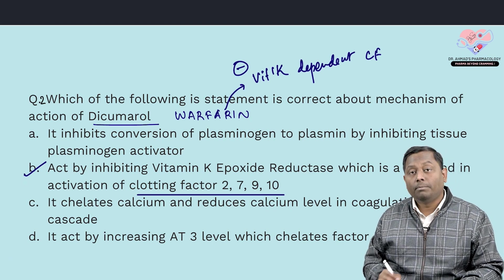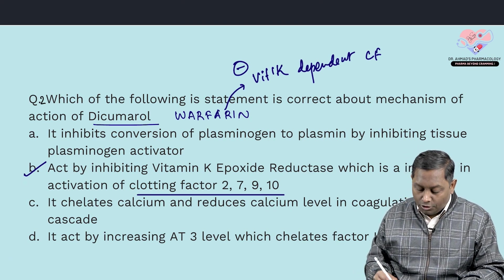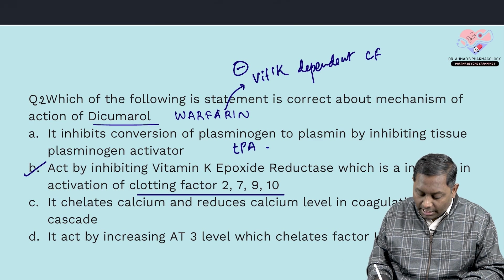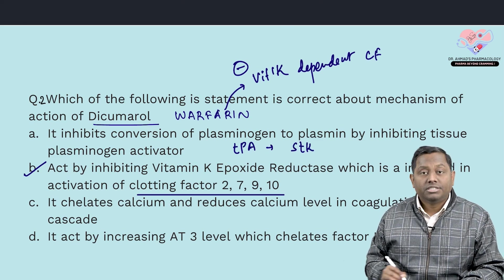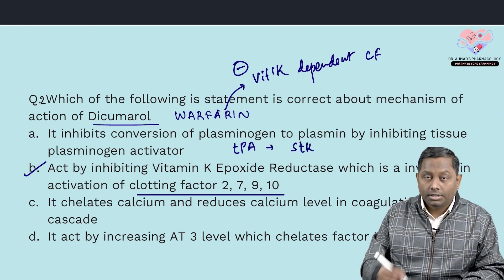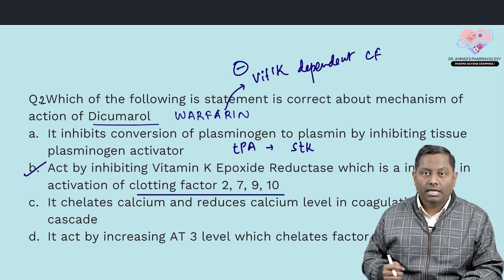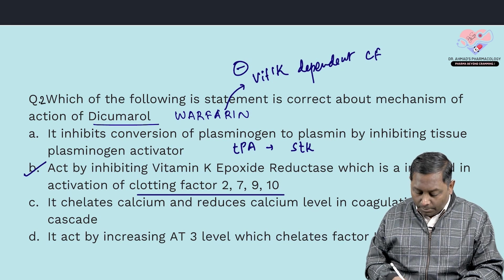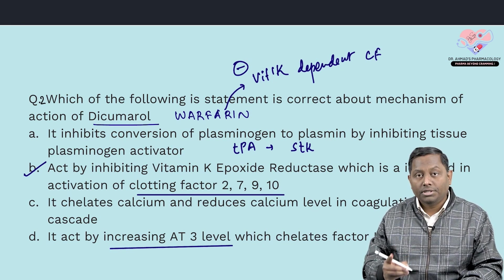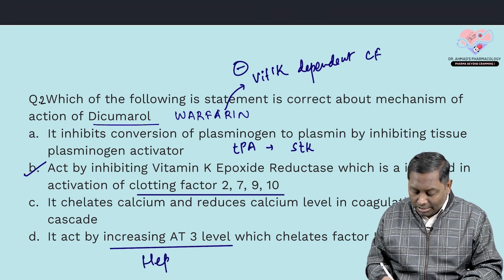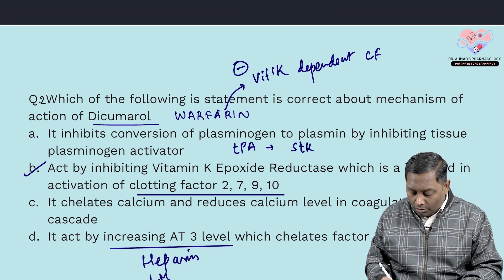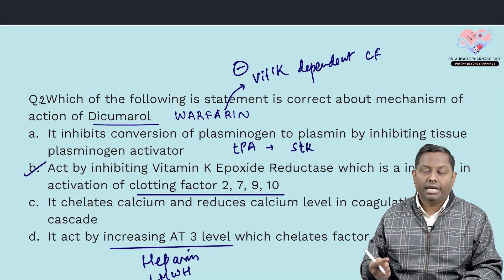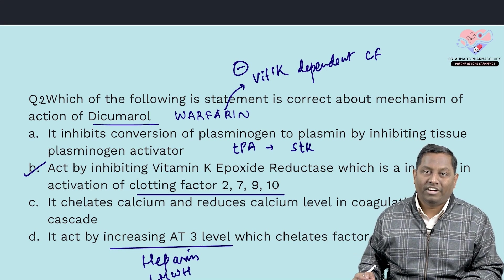Option A says it inhibits conversion of plasminogen to plasmin — that would be tissue plasminogen activator; drugs like streptokinase, urokinase, reteplase, anistreplase, and tenecteplase do that. Warfarin does not have calcium-chelating properties. Option D says it acts by increasing antithrombin-3 activity — antithrombin-3 activity is increased only by heparin or low molecular weight heparin, which bind factors 2 and 10. So option B is the correct answer.